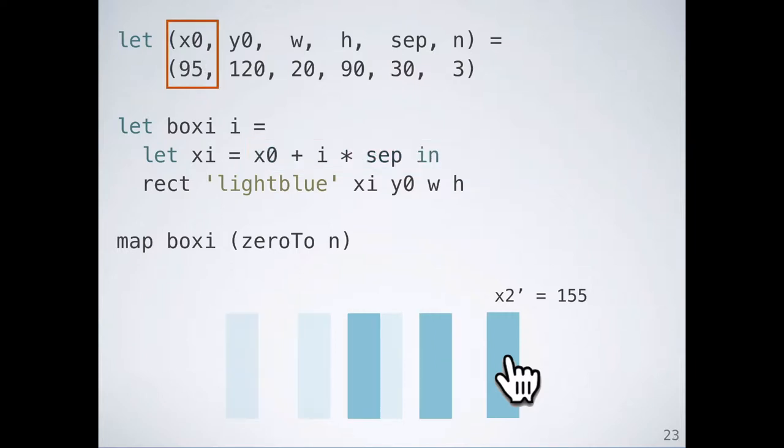This has the effect of moving only the third box while leaving the other two boxes in place. Another option is to change x0, the x position of the first box. This has the effect of translating all the boxes together. Alternatively, we might instead change the separation between the boxes, which will spread the boxes apart. And in fact, we could change both x0 and sep in different amounts.